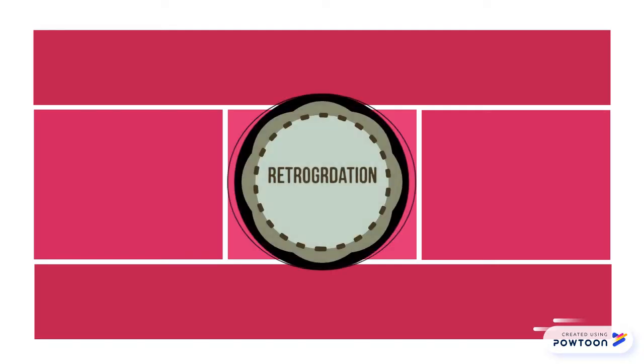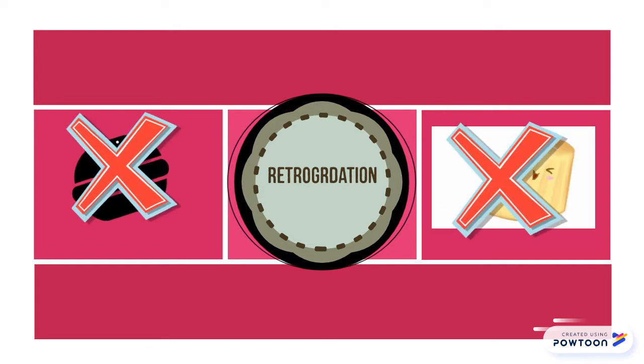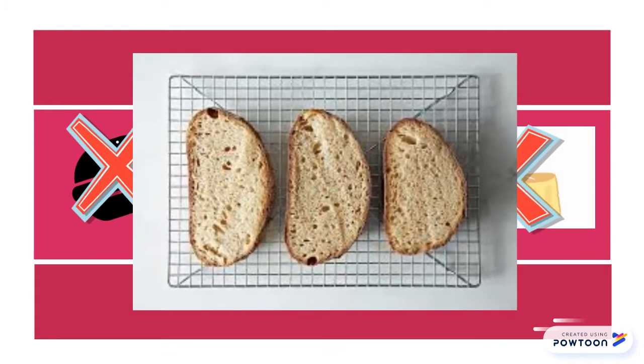Retrogradation will often give an adverse effect to the food, such as staling of bread.